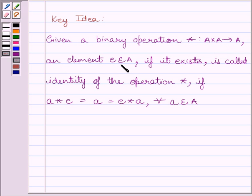an element E belonging to set A, if it exists, is called identity of the operation star if A star E is equal to A is equal to E star A for every A belonging to set A.